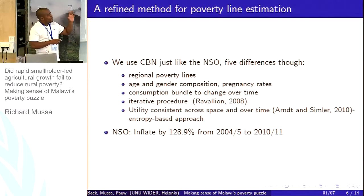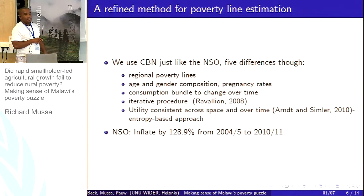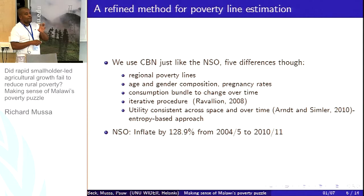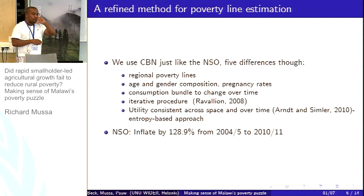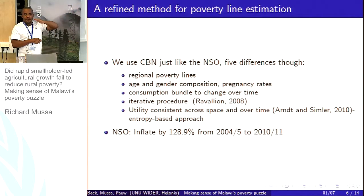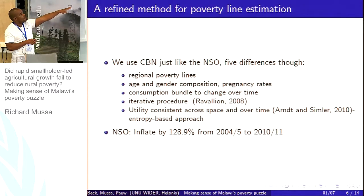To explain what the official poverty figures were derived from: from 2004, the National Statistics Office used the standard cost of basic needs approach. For 2010, however, they did not redo that exercise. All they did was inflate the 2004 poverty lines by a figure of 128%, applied to both the food and non-food components. Where this number comes from is not clear — you cannot find it in the official CPI data. And as we'll see, this number is significantly lower than what we are getting from the dataset.